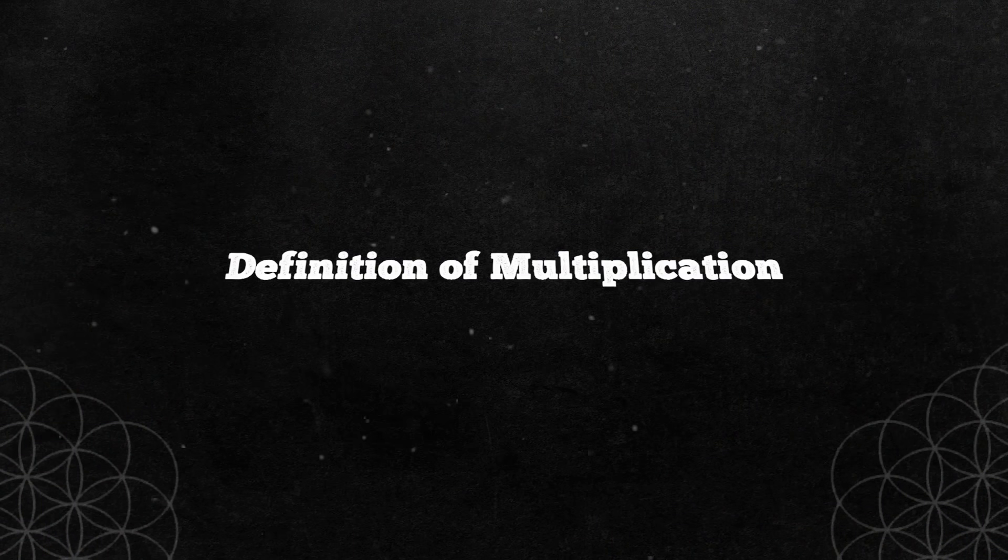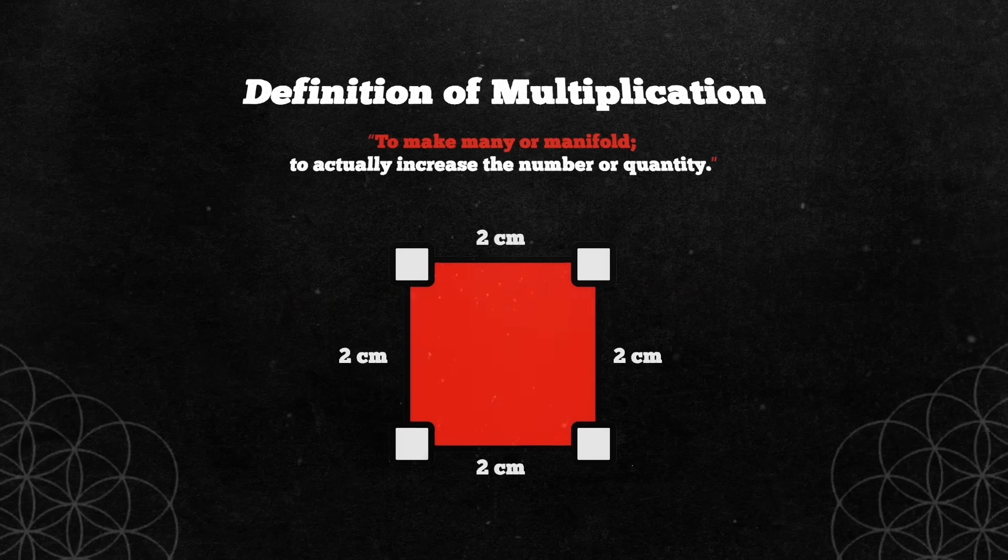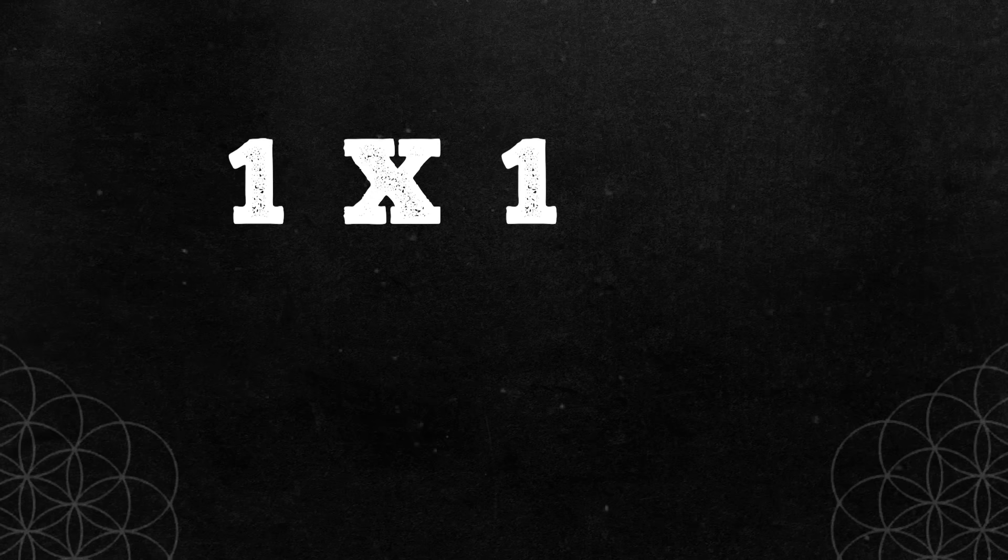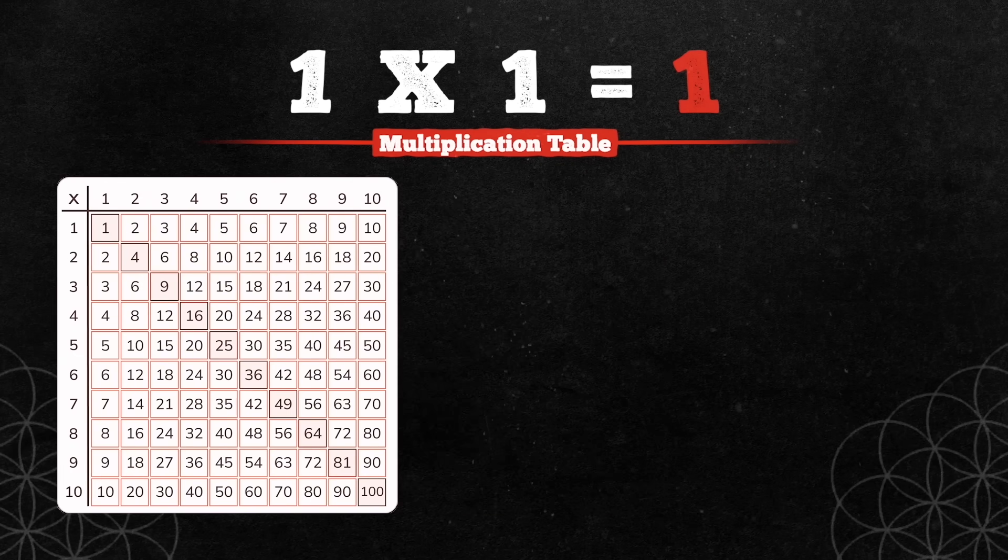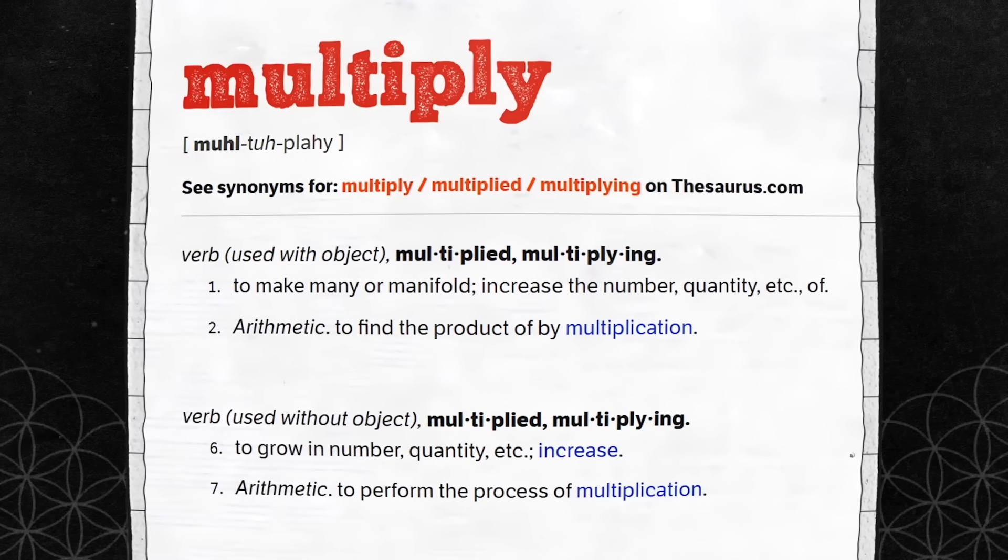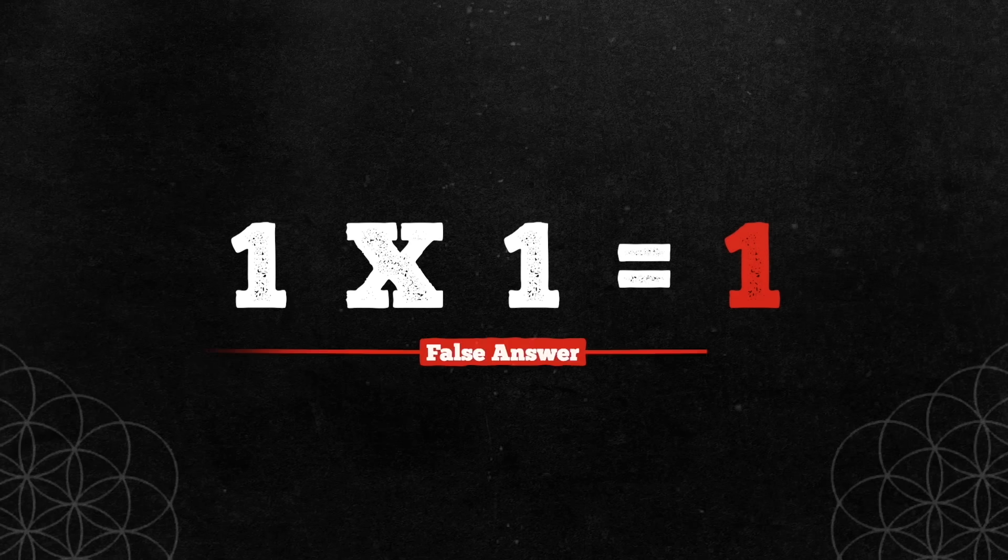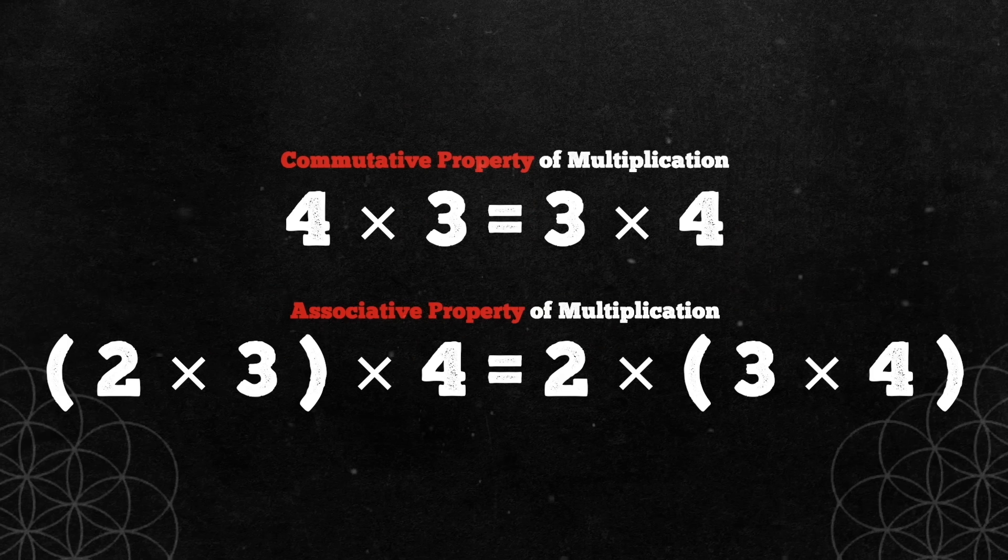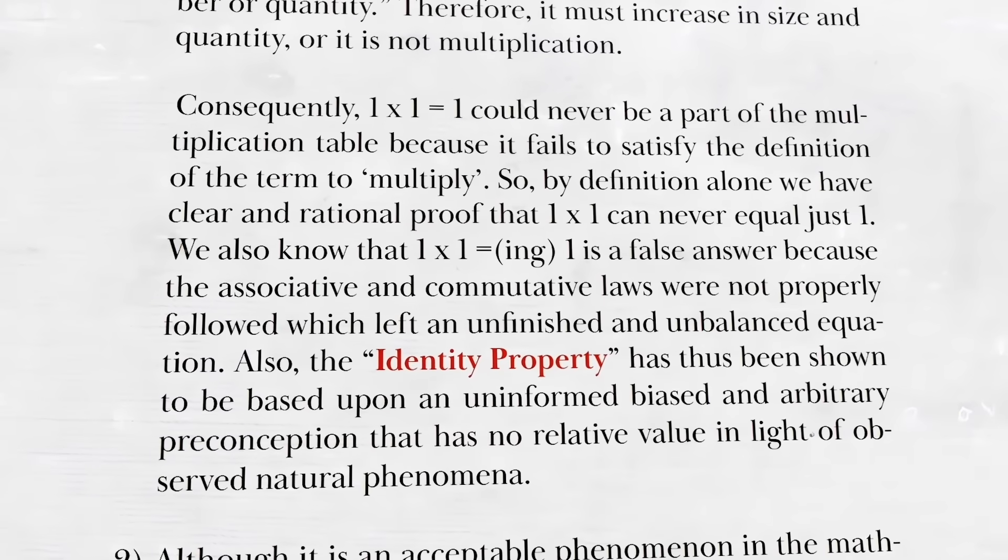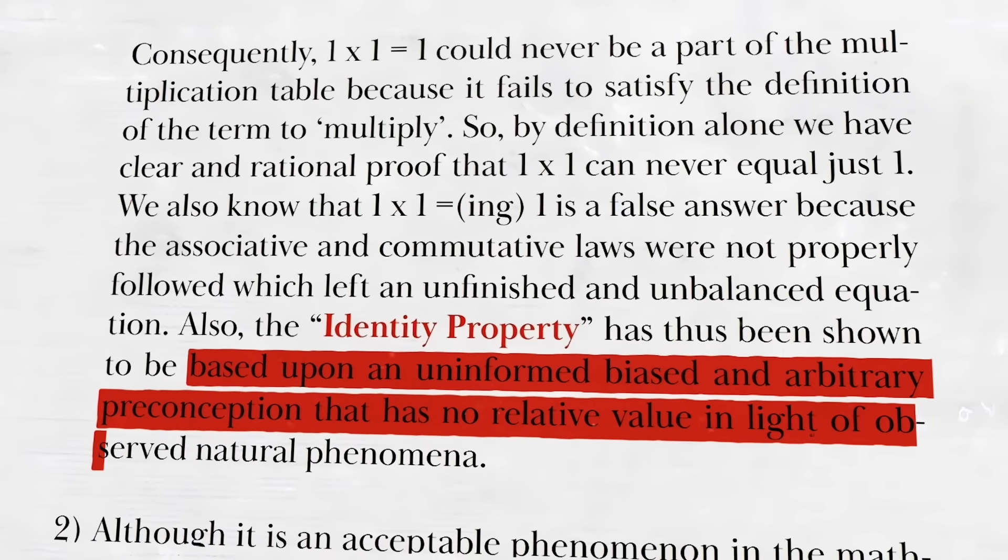We know by definition alone that to multiply means to make many or manifold, to actually increase the number or quantity. Therefore, it must increase in size and quantity, or it is not multiplication. Consequently, one times one equals one could never be a part of the multiplication table because it fails to satisfy the definition of the term to multiply. So, by definition alone, we have clear and rational proof that one times one can never equal just one. We also know that one times one equaling one is a false answer because the associative and commutative laws were not properly followed, which left an unfinished and unbalanced equation. Also, the identity property has thus been shown to be based upon an uninformed, biased, and arbitrary preconception that has no relative value in light of observed natural phenomena.